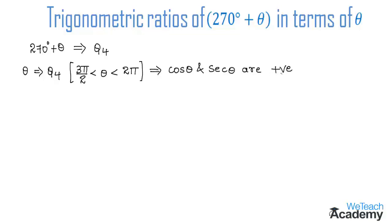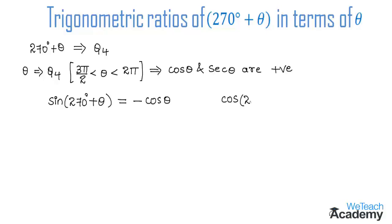Let us find the values of trigonometric ratios of 270 degrees plus theta in terms of theta. Starting with sine: since 270 degrees plus theta lies in the fourth quadrant, and sine is negative in the fourth quadrant, we get a negative result. Since 270 is an odd multiple, the ratio sine changes to cos, giving us minus cos theta as the result for sin(270° + θ).